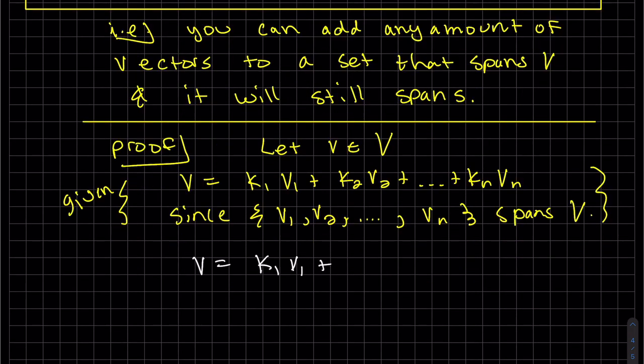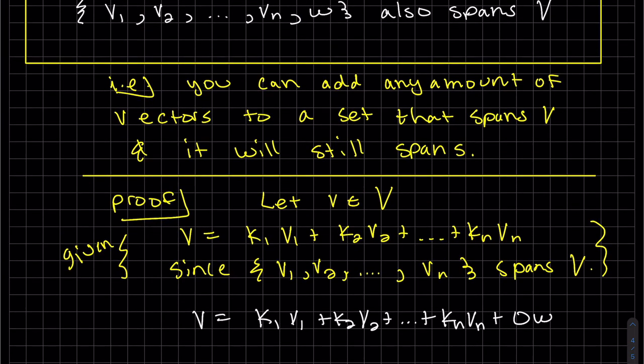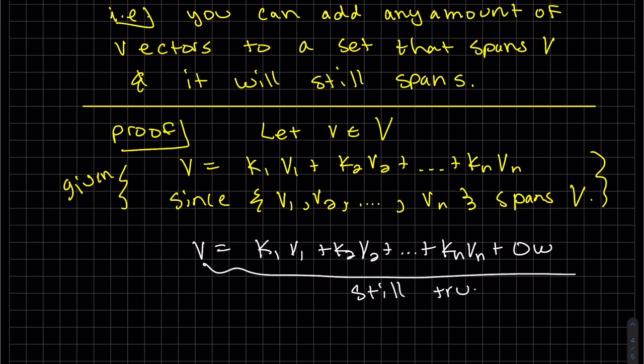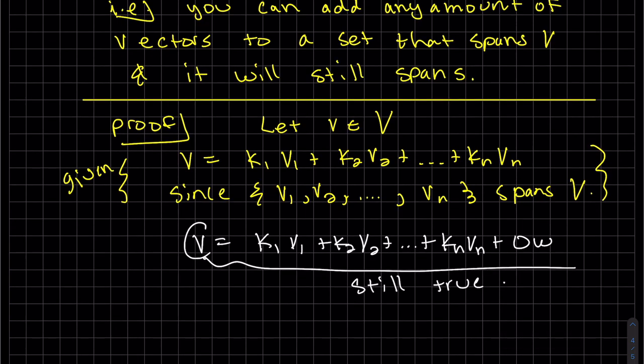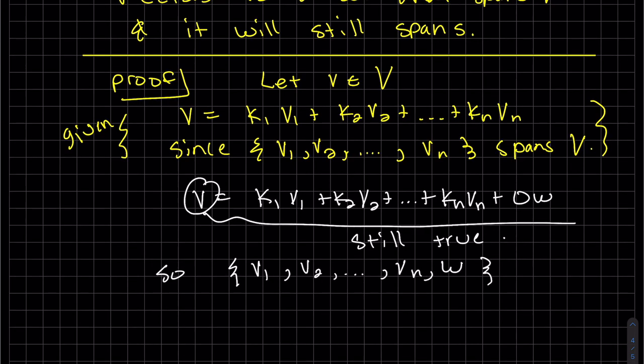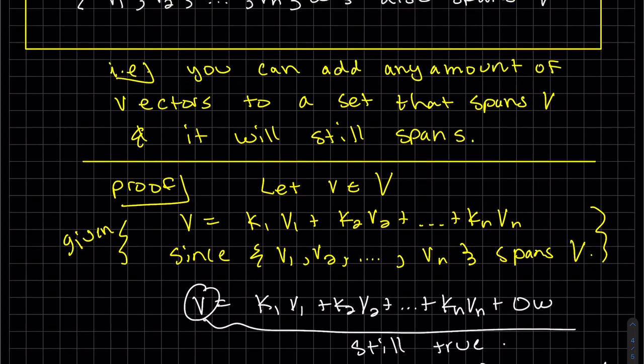Now we're going to take that same thing that was given, v, and we're going to add the constant zero times w. This is still true. We just saw that any vector can be written as a linear combination of this new set.